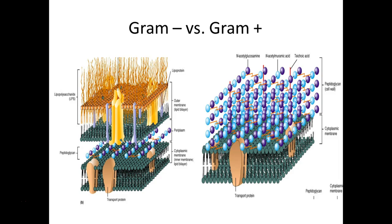Even though any cell could be stained with the gram stain, we mainly do it on bacteria to know the basic structural differences that categorize a cell as gram positive versus gram negative. For gram positive bacteria, they have a very thick cell wall made up of peptidoglycan — alternating sugars hooked together by amino acids. Additionally, gram positives have teichoic acid that acts almost like rebar to help support the many layers of this substance.